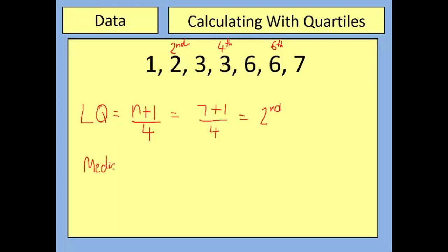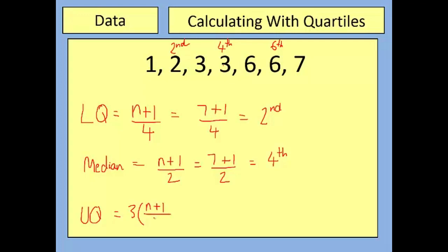The median uses the formula (N+1)/2. With N=7, that's 8 divided by 2, which is 4 — so we want the 4th bit of data. That doesn't mean the answer is 4; counting through the ordered list to the 4th value gives us 3. For the upper quartile, you want 3×(N+1)/4. That's 3×(7+1)/4 = 3×2 = 6, so we want the 6th value in the list, which was 6. These formulas are incredibly useful, so jot those down.